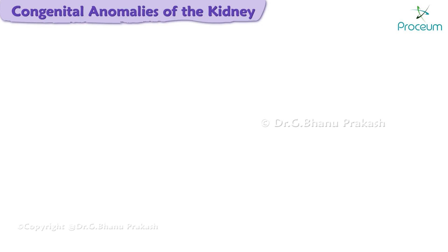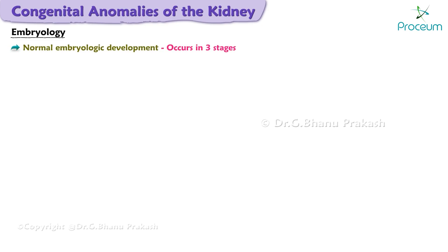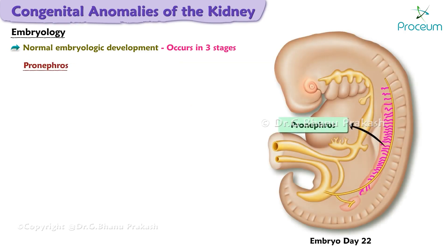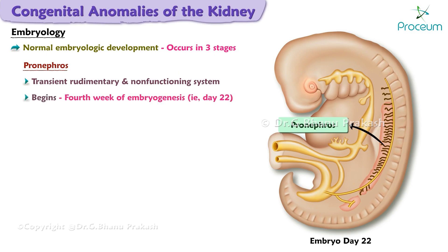Congenital anomalies of the kidney — embryology. Normal embryologic development of the kidney occurs in three stages. Note that embryonic age begins at conception and not at the last menstrual period. The pronephros is a transient, rudimentary, and non-functioning system that begins in the fourth week of embryogenesis, that is day 22, and disappears by the end of the fourth week, that is day 28.